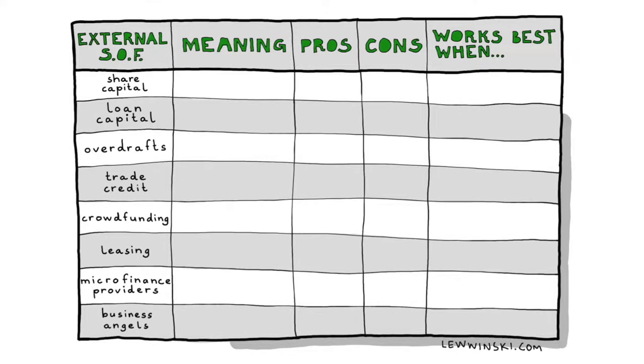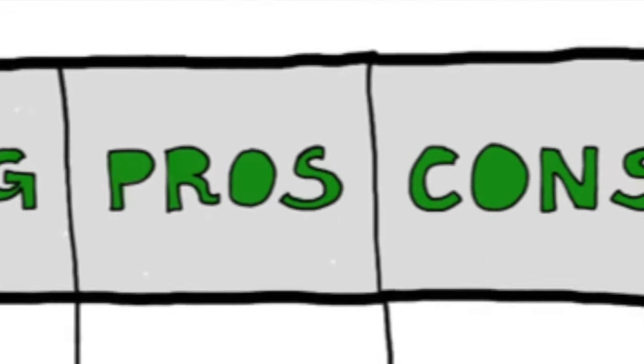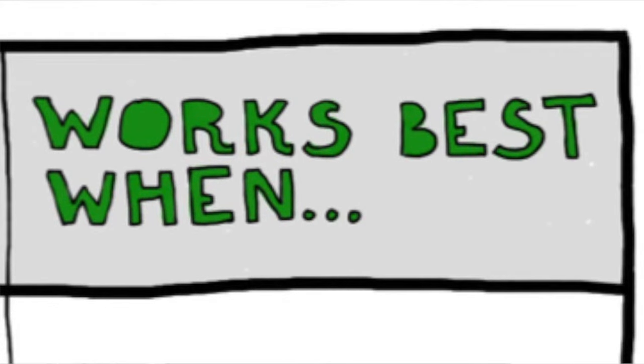In this part of class, we're going to do exactly the same thing as before, but we're talking about external sources of finance — sources that come from outside the organization. We'll talk about eight external sources: share capital, loan capital, overdrafts, trade credit, crowdfunding, leasing, microfinance providers, and business angels. At the end, I'll also share some additional external sources not included in the IB Business Management course. Fill in the table as we go, noting what each source means, its pros and cons, and when it works well.